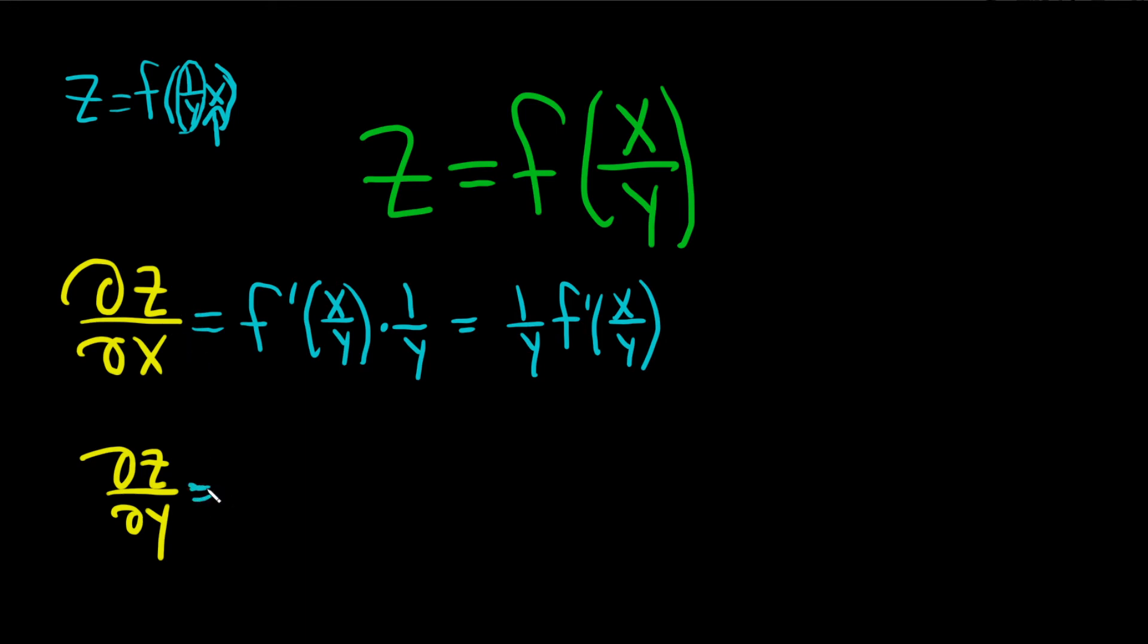Del z del y, now all of our x's are constants. So we're going to have to multiply by the derivative of the inside, so it might be beneficial to write it like this now.